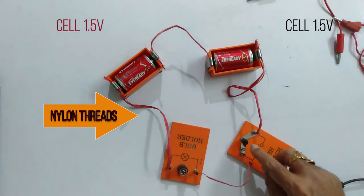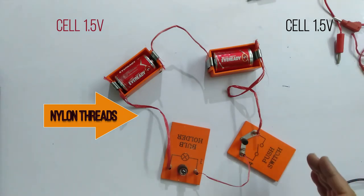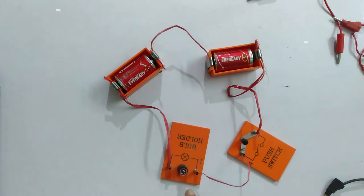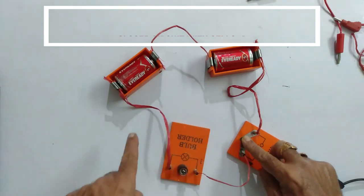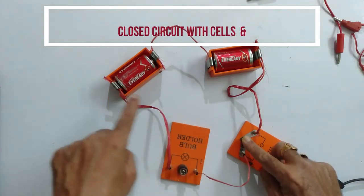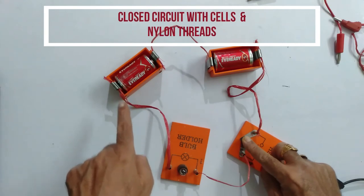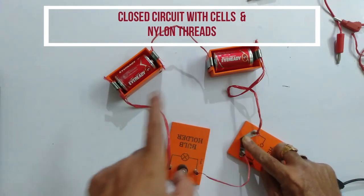Now let us see. I'll again push the switch. Let us observe if the light bulb will glow or not. See, even after connecting this power source, that is, even after connecting the cells, the circuit is also completed.